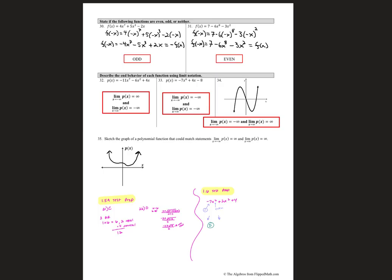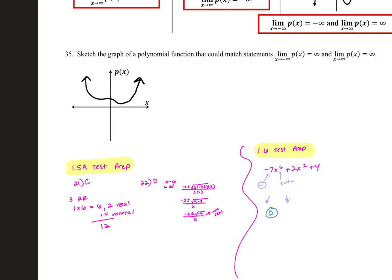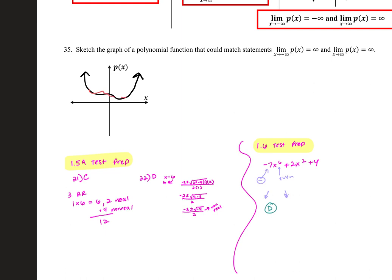And then the last page: even and odd from your equation, end behavior using limit notation, and your graph using limits. Remember, anything could be in there — we just need something to go up on both sides. And then the extra test questions with multiple choice options for problems 15 and 16.